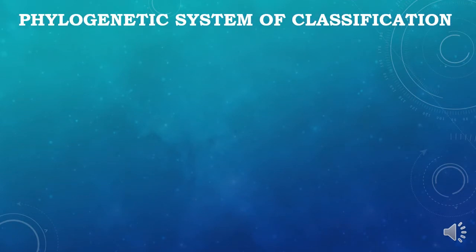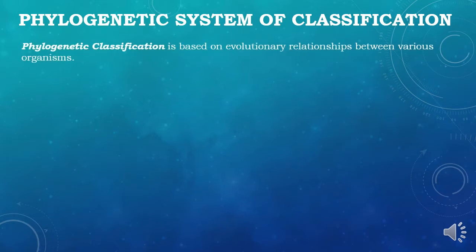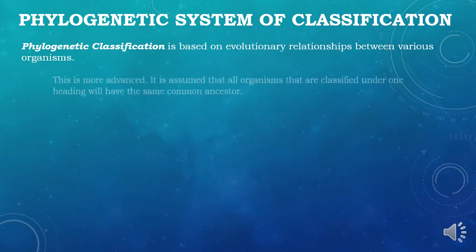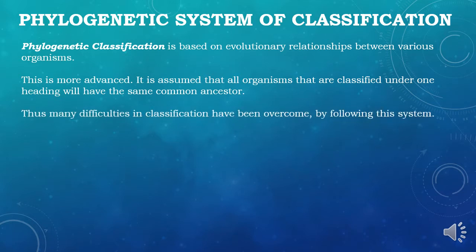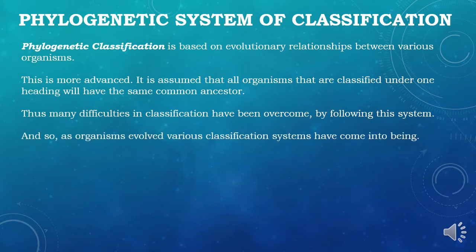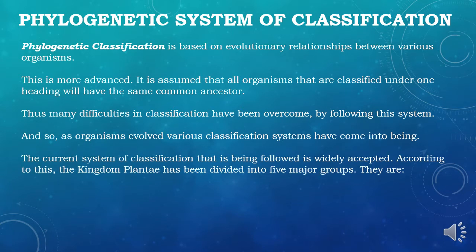Coming to the phylogenetic system of classification, which is the third system — the phylogenetic system is based on evolutionary relationships between various organisms. It is assumed that all organisms classified under one heading share the same common ancestor. As they are grouped based on evolutionary relationships, organisms under one division share a common ancestor, overcoming many difficulties in classification. The phylogenetic system has advantages over all other systems, and as organisms evolved, various classification systems came into being.